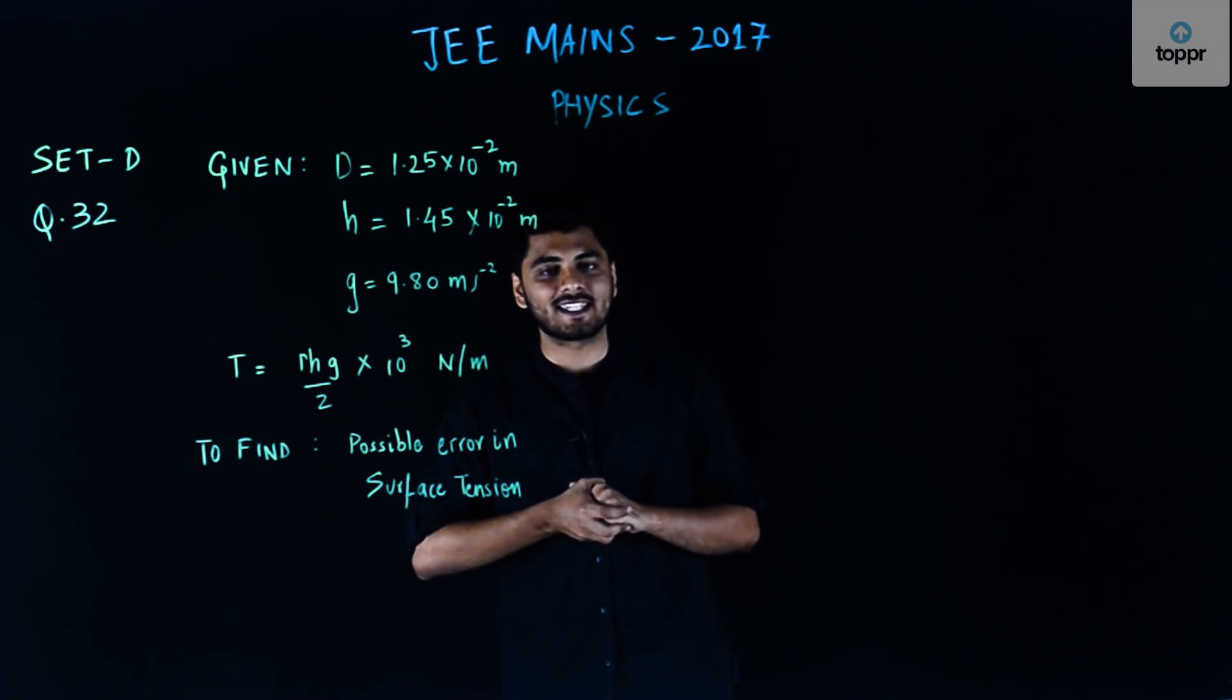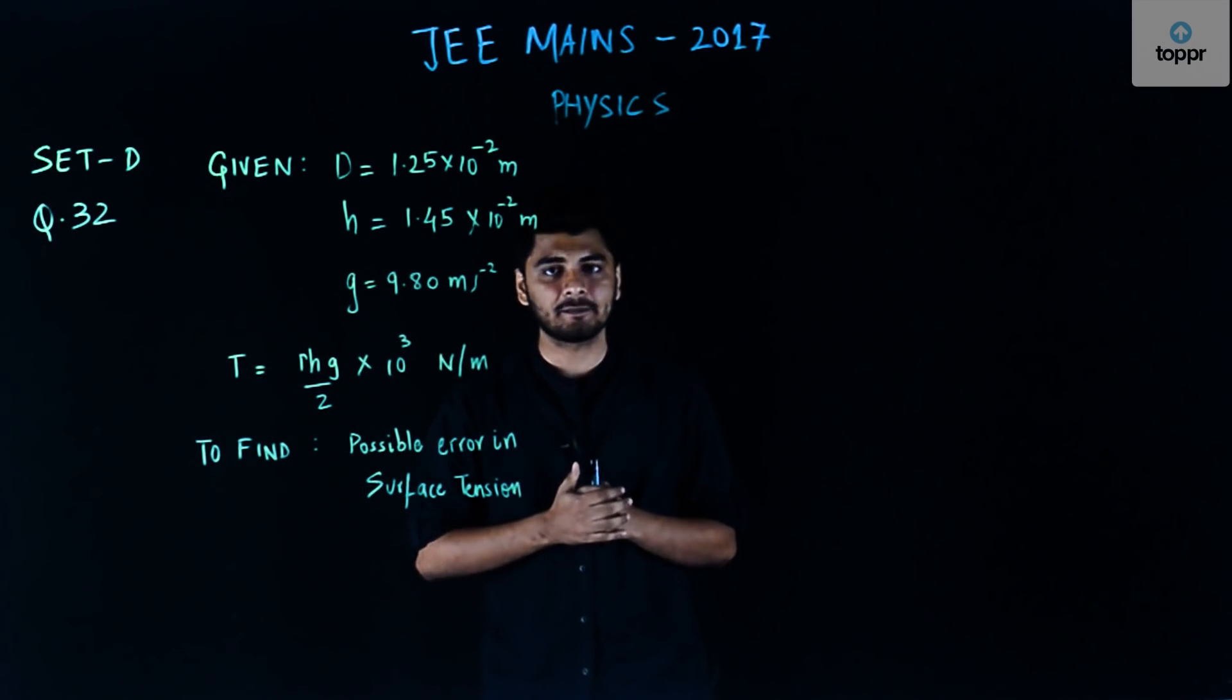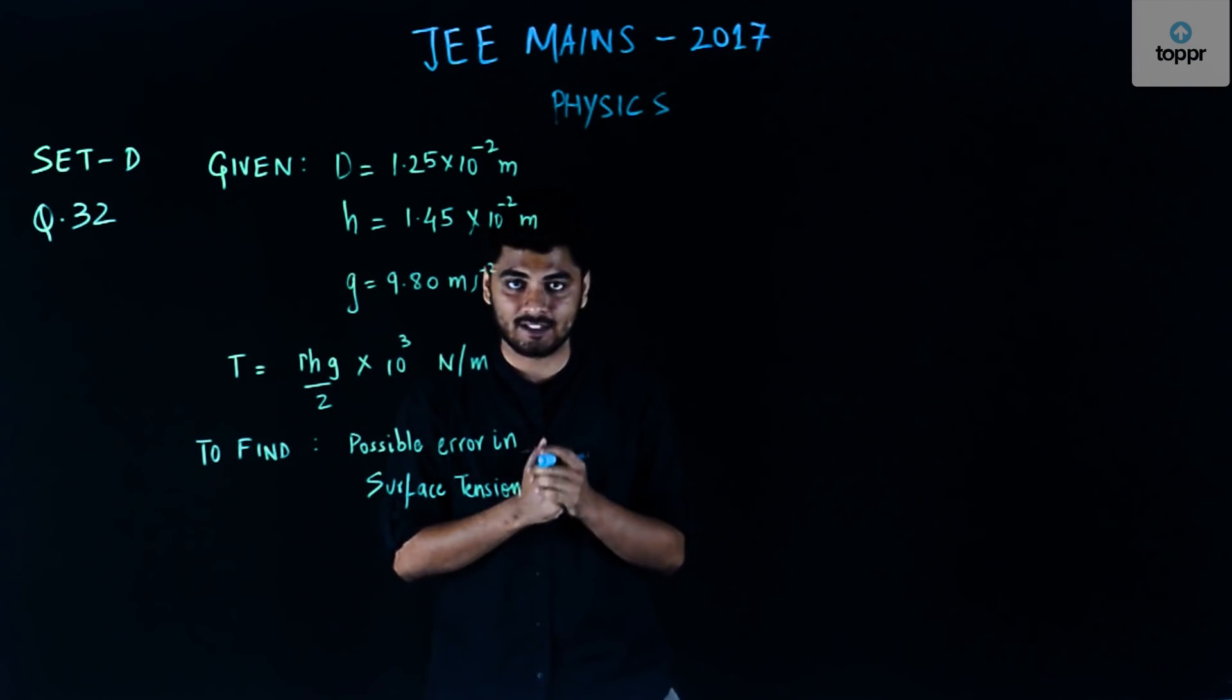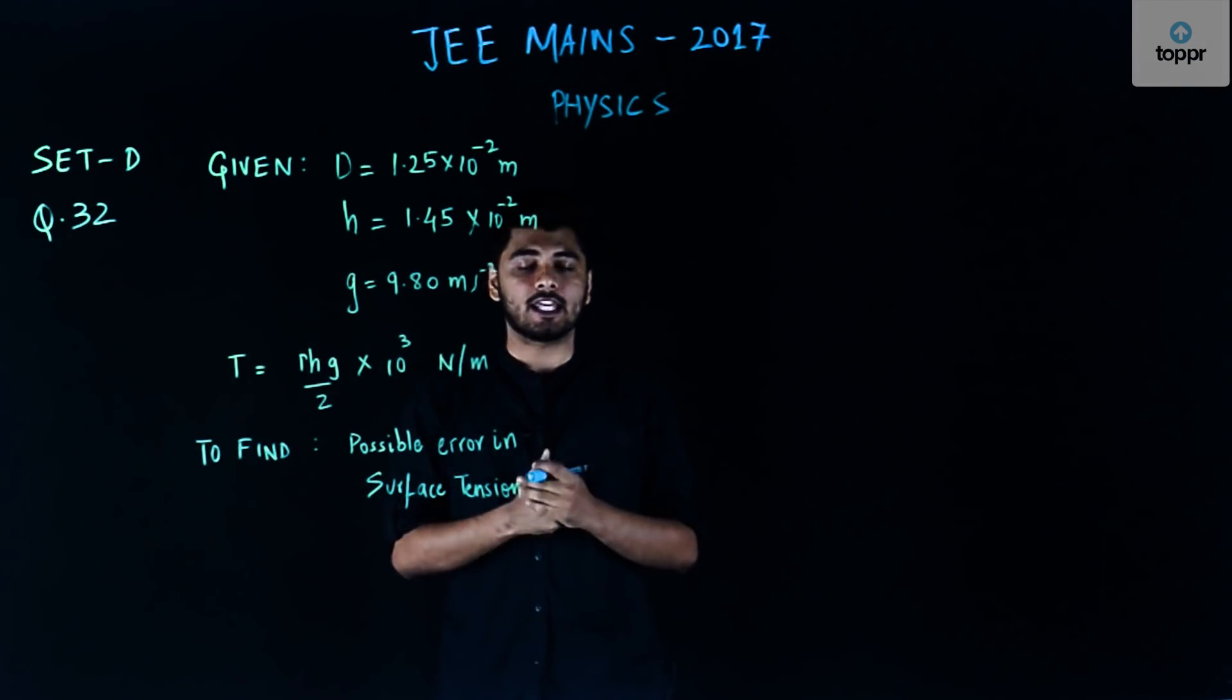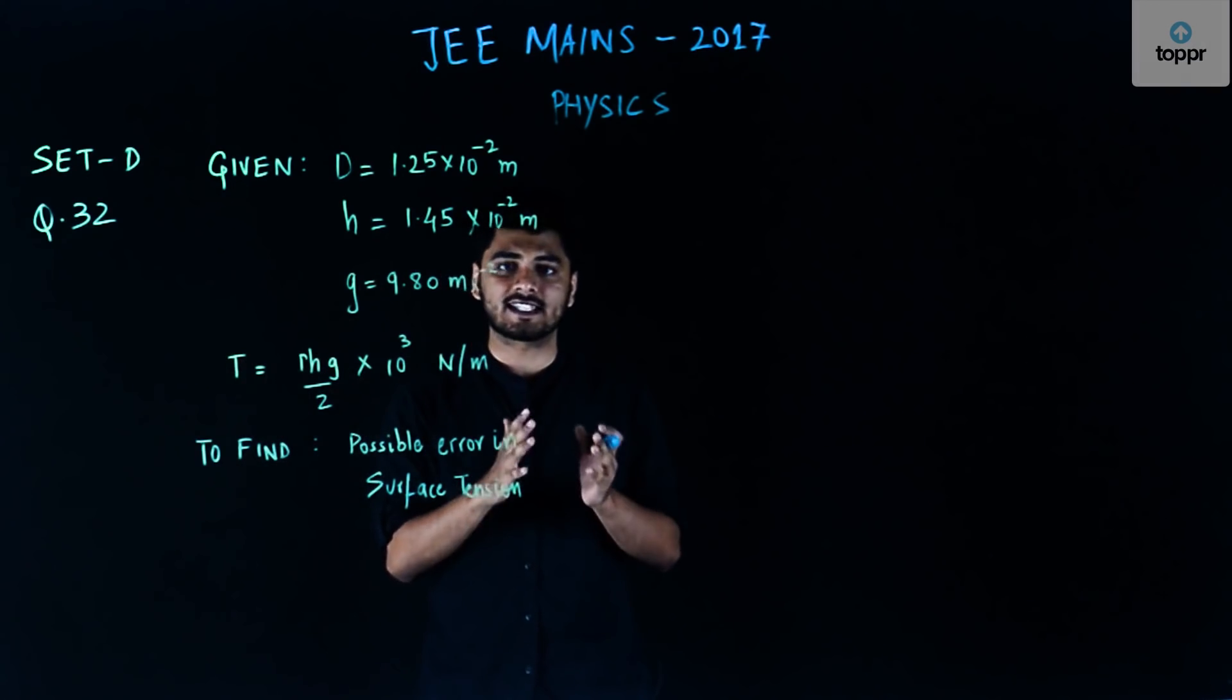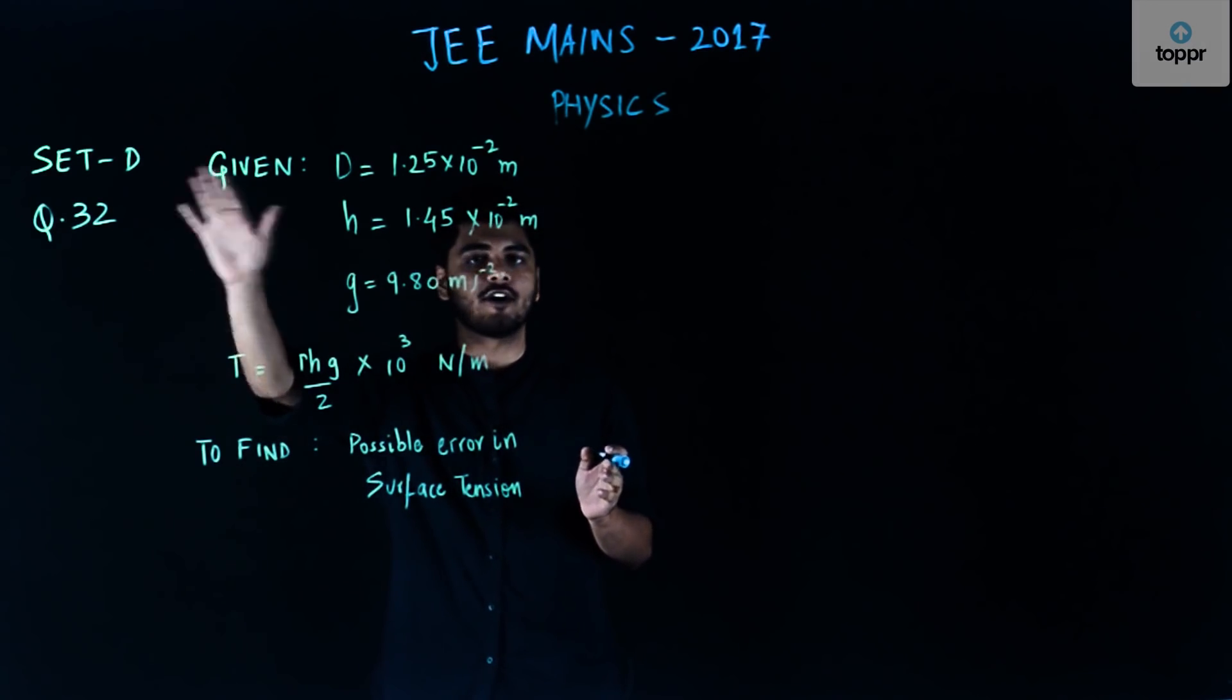Hello friends, so we have been solving the JEE Mains paper of 2017 and we are solving the physics section as of now. The set D is the set which we are solving and this is the second question for physics, that is question number 32 of set D.